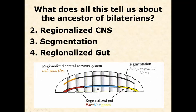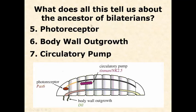Fourth, a regionalized gut: the foregut processes and moves food into the digestive system; the midgut — stomach and small intestine — breaks down and absorbs nutrients; and the hindgut — large intestine and colon — is primarily for water balance and osmoregulation. This regionalized gut was present in the common bilaterian ancestor. This is deep homology — we didn't know it until we examined the genes that build these structures.